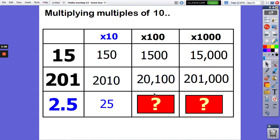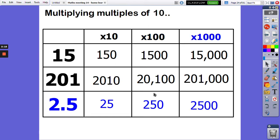Okay, 2.5 now. 2.5 times 10 is 25. 2.5 times 100 is 250. And 2.5 times 1000 is 2500. Okay, let's see what's next, shall we?